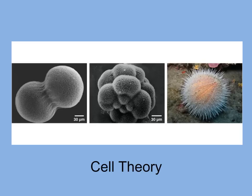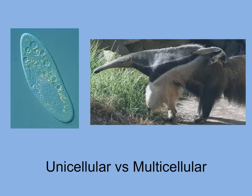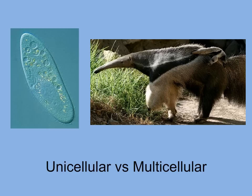Fertilized eggs or zygotes divide and develop into the mature organism. This illustrates a concept in biology called cell theory, which states that all life is composed of cells and that all cells come from pre-existing cells. An organism may be unicellular, or have one cell, such as a paramecium, or an organism may be multicellular and have many cells, like the anteater.